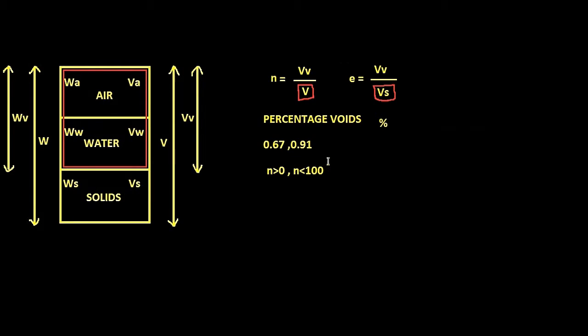Now let us see the extreme boundary. N is less than 100. In this case it is possible when the soil has the maximum number of voids, that is when volume of voids is almost equal to V. So that means the soil has maximum voids.